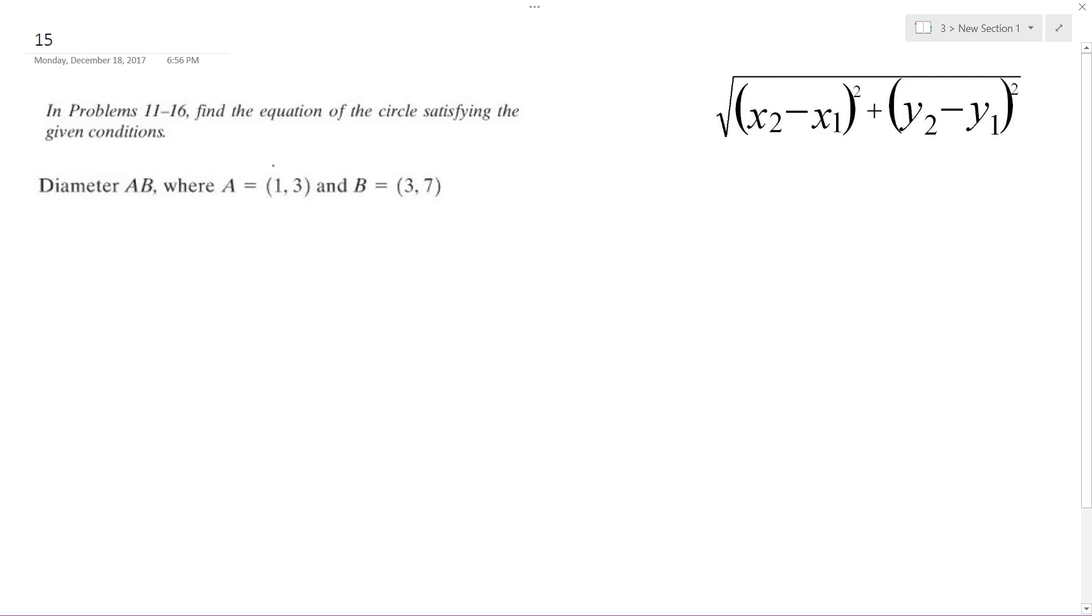So I'll just quickly find the midpoint, which is going to be equal to x1 plus x2 divided by 2, and then y1 plus y2 divided by 2. That's 1 plus 3 divided by 2, comma, 3 plus 7 divided by 2. So my midpoint's going to be 2 comma 5. This is going to be my center.